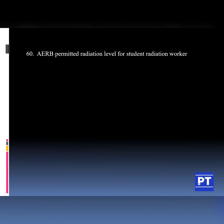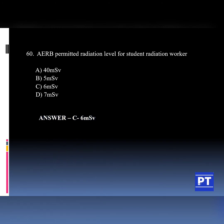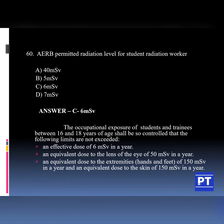Question number 60: AERB permitted radiation level for student radiation workers. Option A 40 mSv, Option B 5 mSv, Option C 6 mSv, Option D 7 mSv. The answer is Option C, 6 mSv. The AERB recommended permitted radiation level for occupational exposure of students and trainees between 16 to 18 years of age shall be controlled so the following limits are not exceeded: effective dose of 6 mSv in a year, equivalent dose to the lens of the eye 50 mSv per year, equivalent dose to the extremities 150 mSv per year, and equivalent dose to the skin 150 mSv per year.